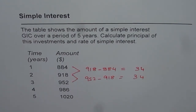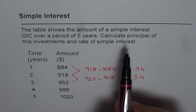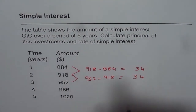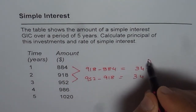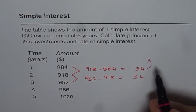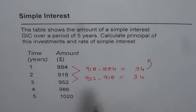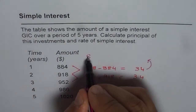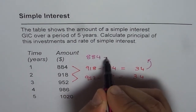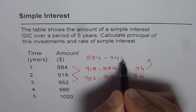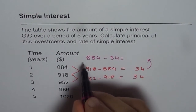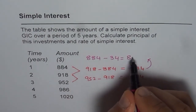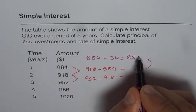It is now very clear that $34 is the interest earned every year. To find the principal — what we started with — we take away 34 from 884. So 884 minus 34 gives us $850.